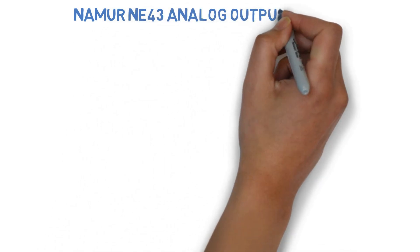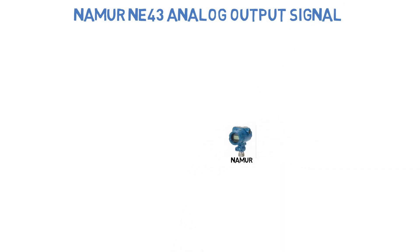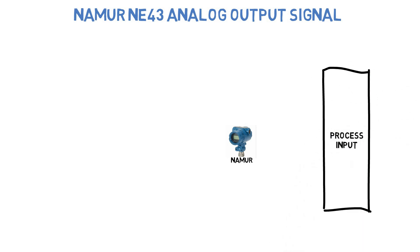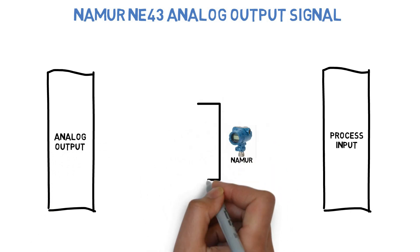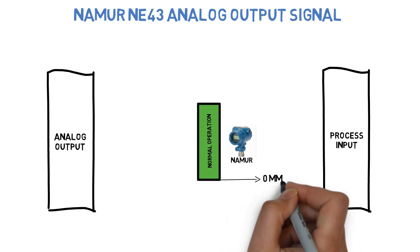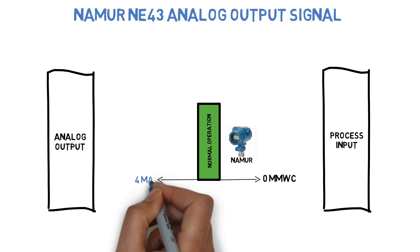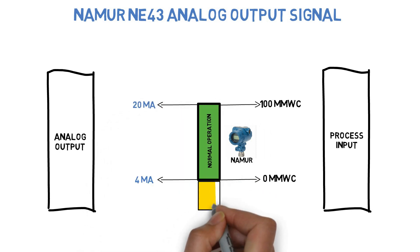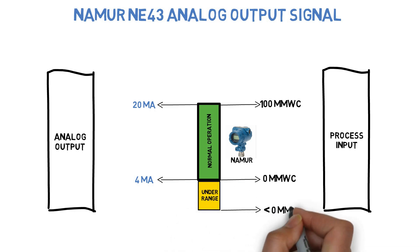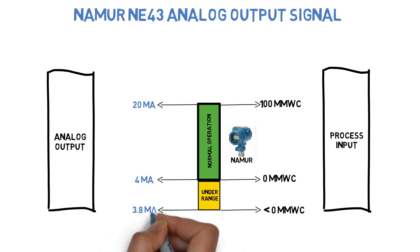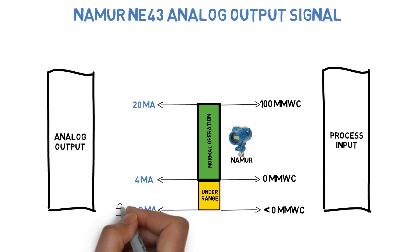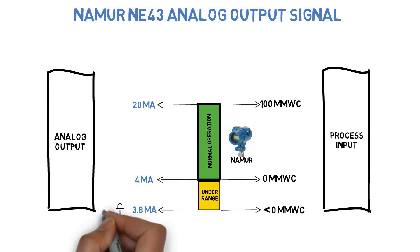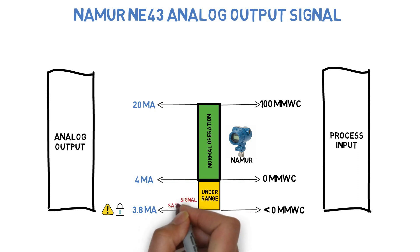Now for the NAMUR NE43 Analog Output Signal. During normal operation, the transmitter analog output shall be between 4 to 20 mA. If the process input falls below the lower range value of the transmitter, the analog output also reduces between 4 and 3.8 mA. If the process input exceeds the lower range value, the analog output holds at 3.8 mA, warning the control unit of an out-of-range event. This out-of-range signal is referred to as signal saturation.